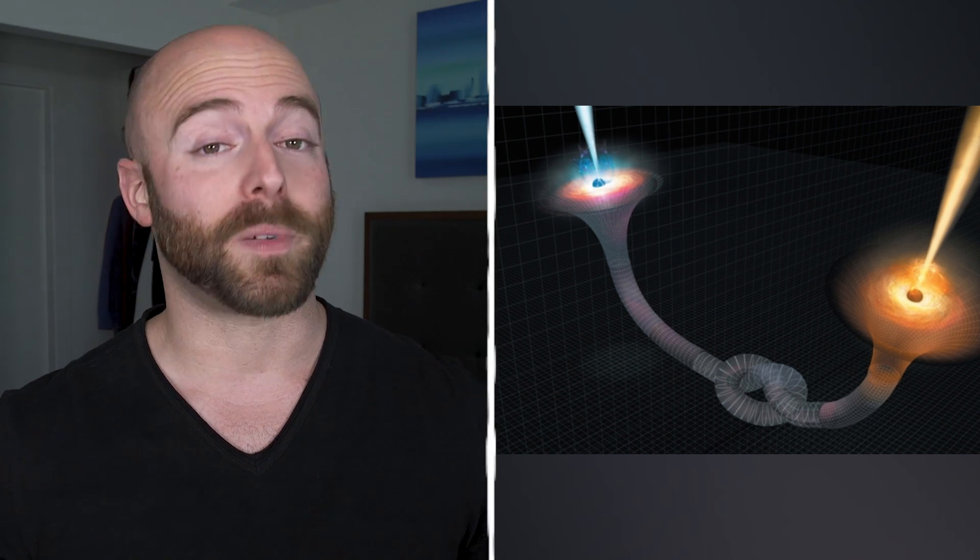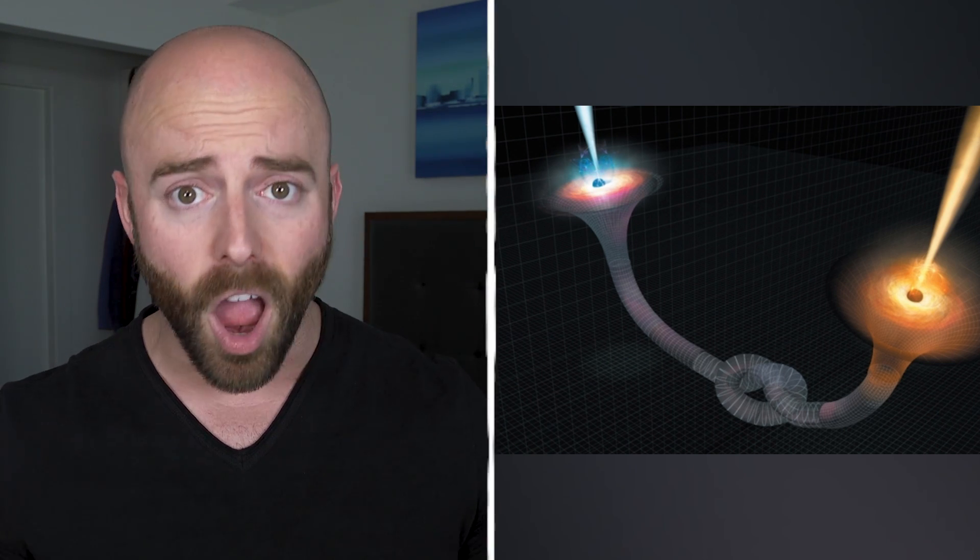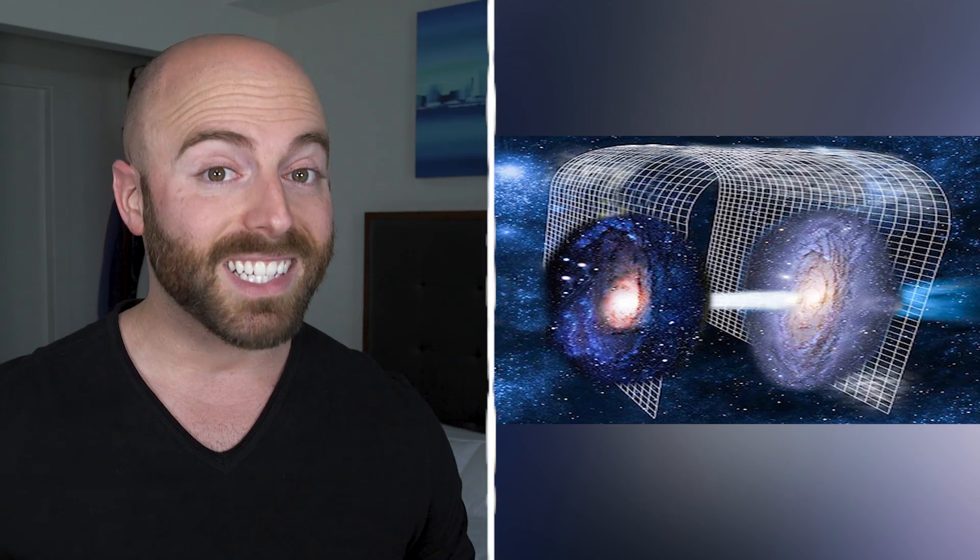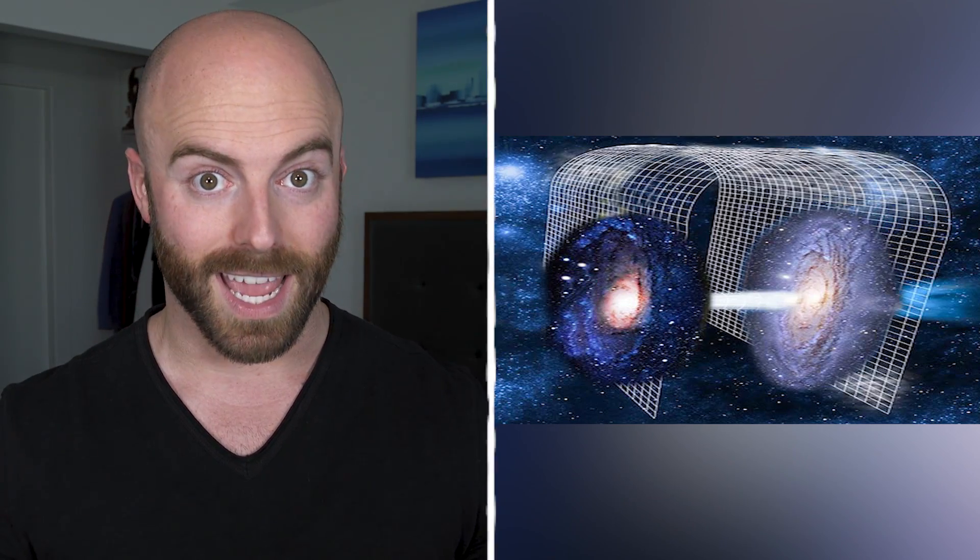You might have heard of this before because science fiction writers and filmmakers have been showing this in movies and talking about what it would look like to actually pass through a wormhole forever. But while Einstein's equations predict that they exist, no one has found evidence of one yet.